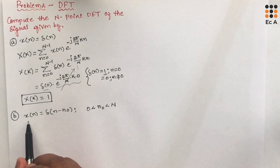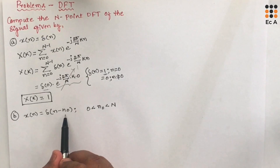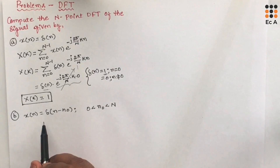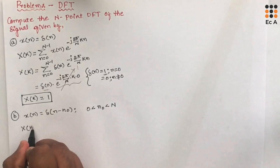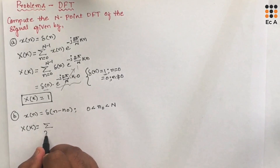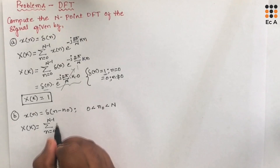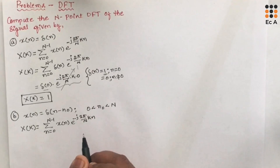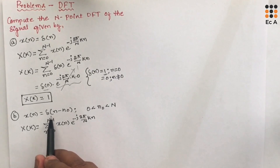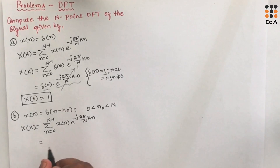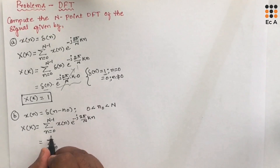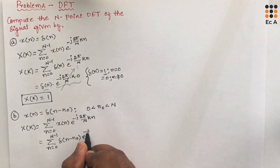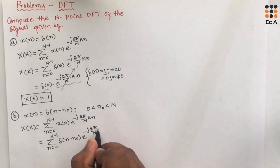Let us take the second problem where the signal is x(n) = δ(n - n₀), where n₀ ranges between 0 and N. For this signal we need to find the DFT. First, let us write the formula X(k) = summation from n=0 to N-1 of x(n) · e^(-j2πkn/N), and substitute x(n) as δ(n - n₀).